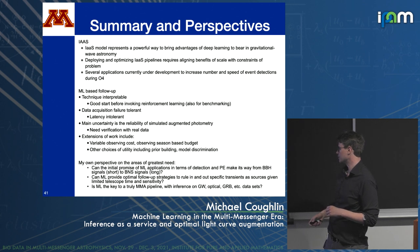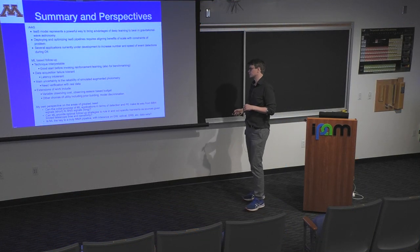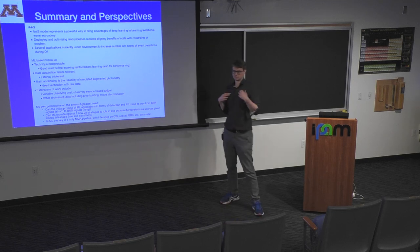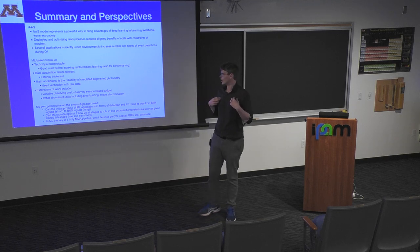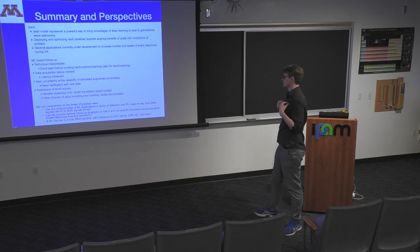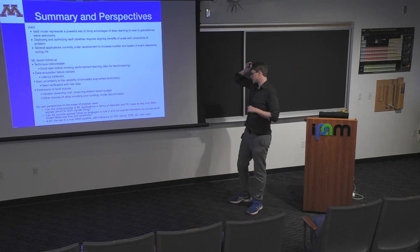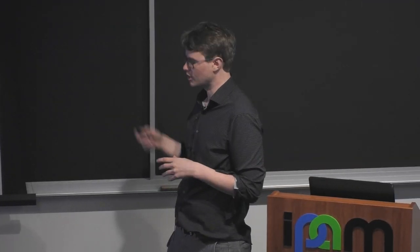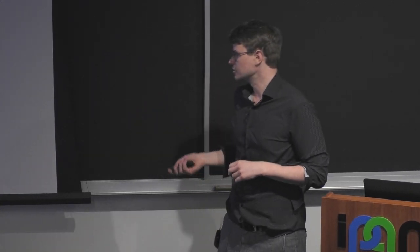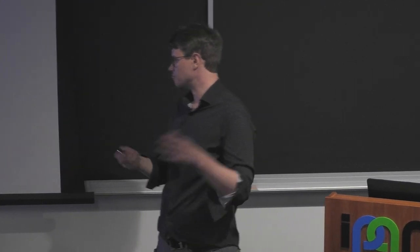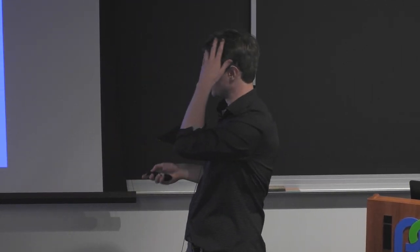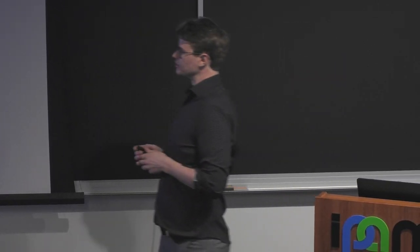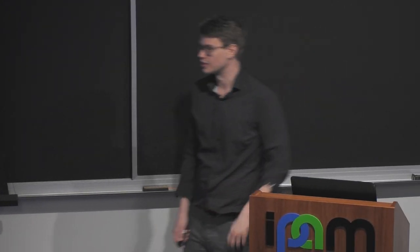Things I'm excited about: can we take the detection and parameter estimation going on with BBH signals and bring them to BNS signals? Everything we've talked about only matters if there's a neutron star involved, which means long signals. Machine learning may be one of the keys to improving follow-up and classification. Down the line, there may even be a way to use ML as an overall MMA pipeline going at the image level. Is that ultimately the key to doing it all in one place? Thank you.